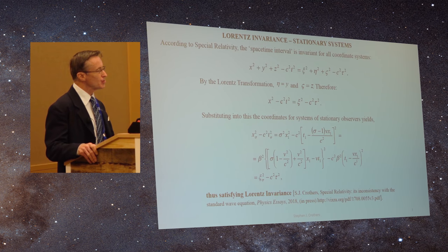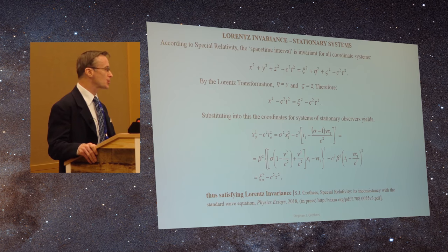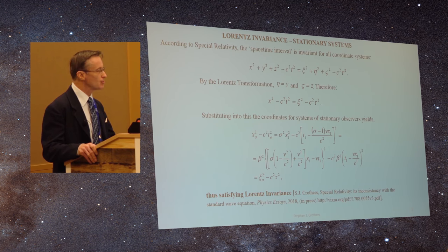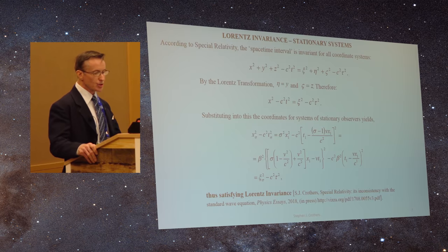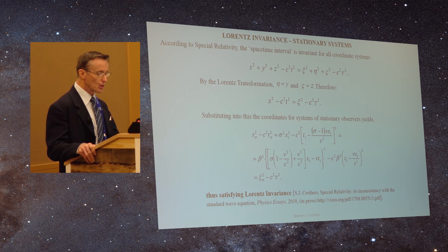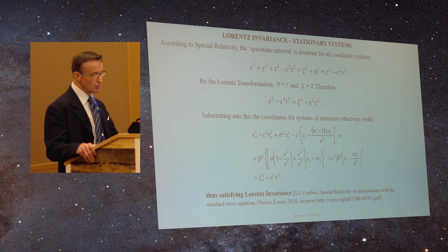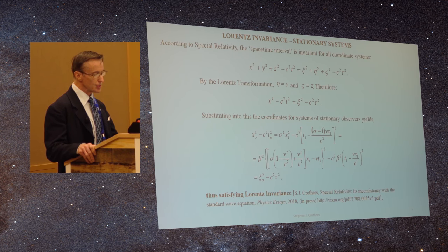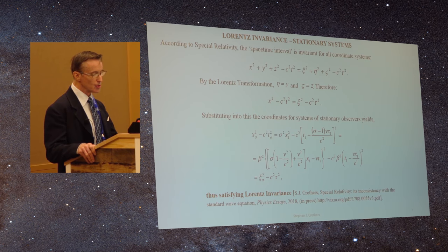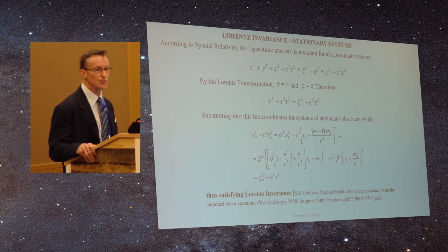The signature of Lorentz transformation is Lorentz invariance. So now we consider this equation for space-time interval, and substituting in, for instance, the condition for stationary observers, we end up with this expression. And it's Lorentz invariant for every single value of sigma.